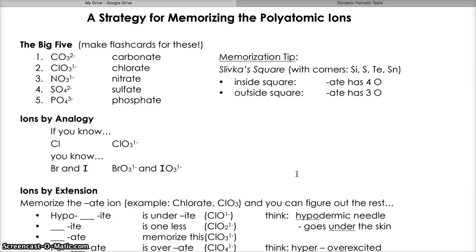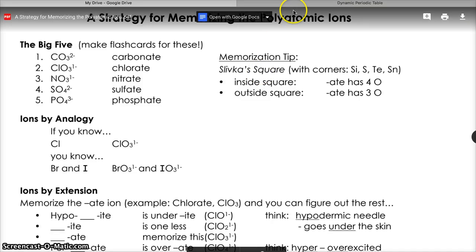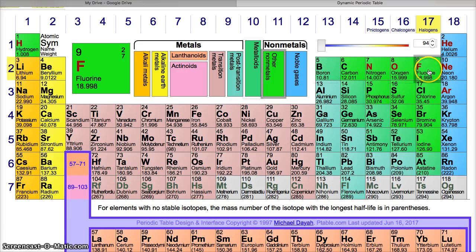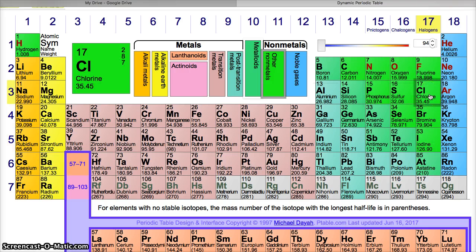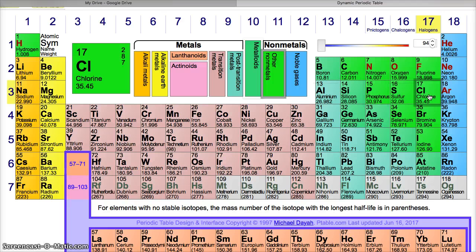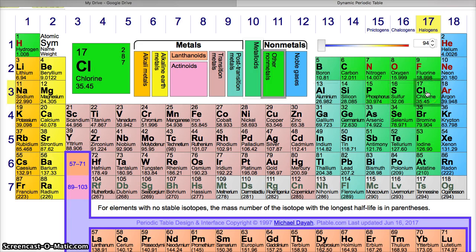Once you've memorized the big five, we can memorize the next group of ions by analogy. These would be the halogens. If you recall, the halogens are fluorine, chlorine, bromine, and iodine. You'll notice chlorate, ClO3, has the exact same formula as bromate and iodate. In other words, any polyatomic ion made from bromine and iodine will have the exact same formula as those made from chlorine.